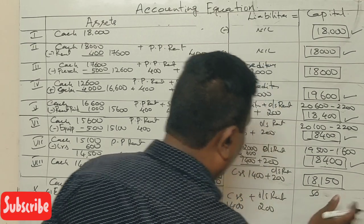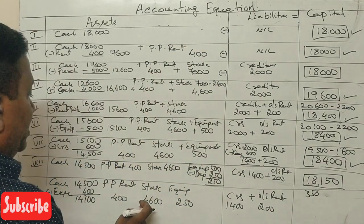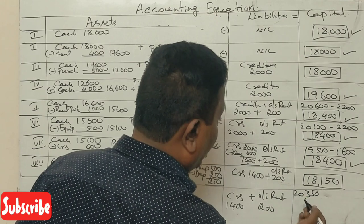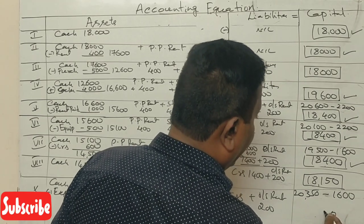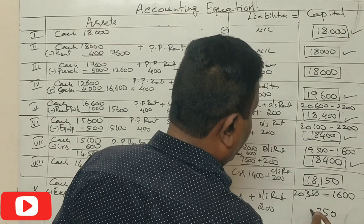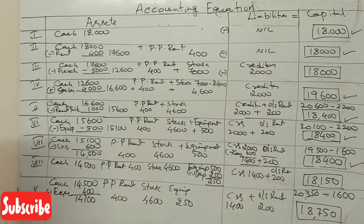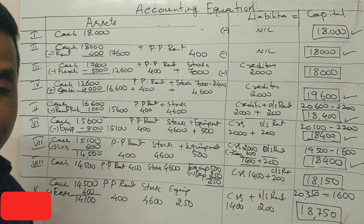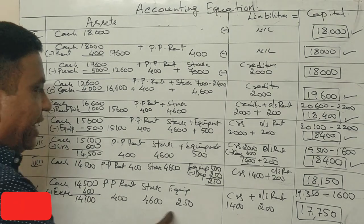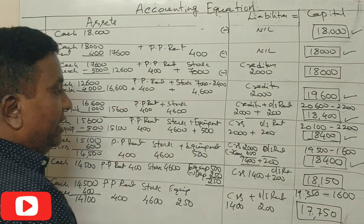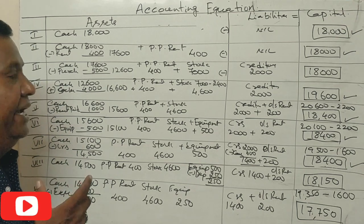Total assets: ₹14,100 + ₹400 + ₹4,600 + ₹250 = ₹19,350. Liabilities ₹1,600. Capital ₹17,750. The accounting equation balances: Assets ₹19,350 = Liabilities ₹1,600 + Capital ₹17,750.